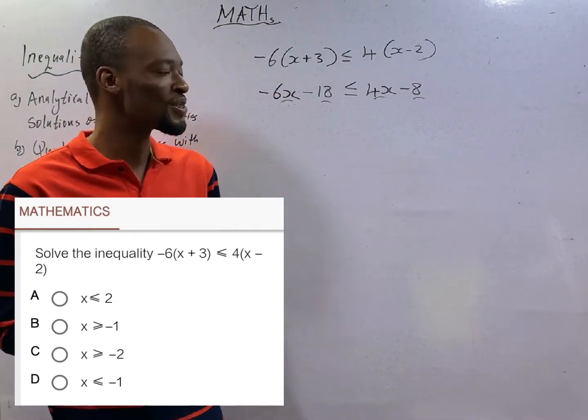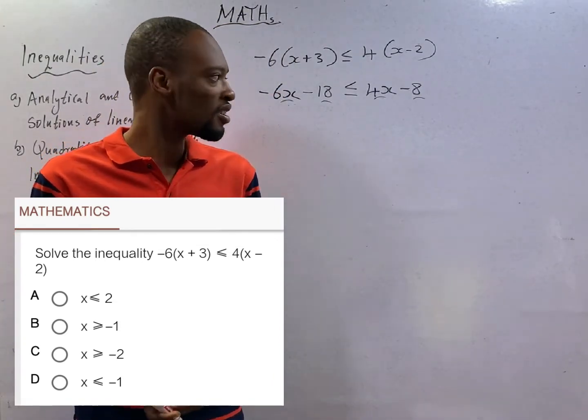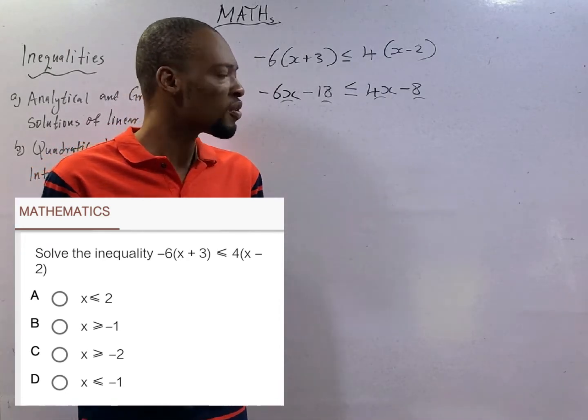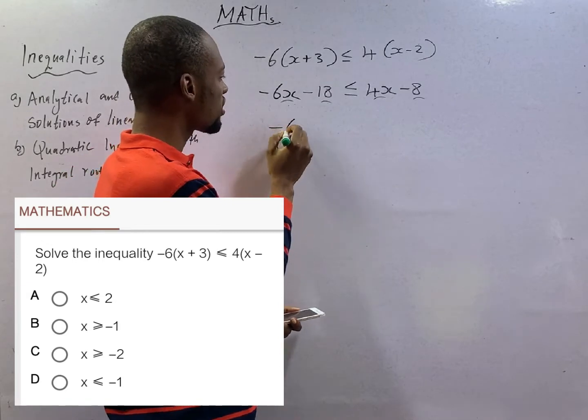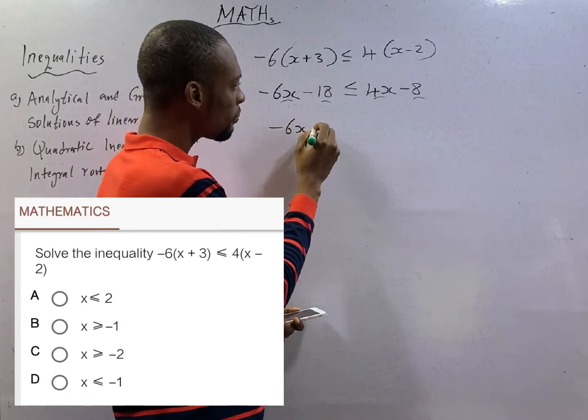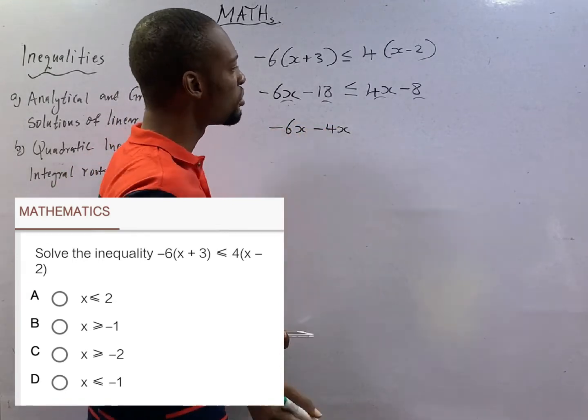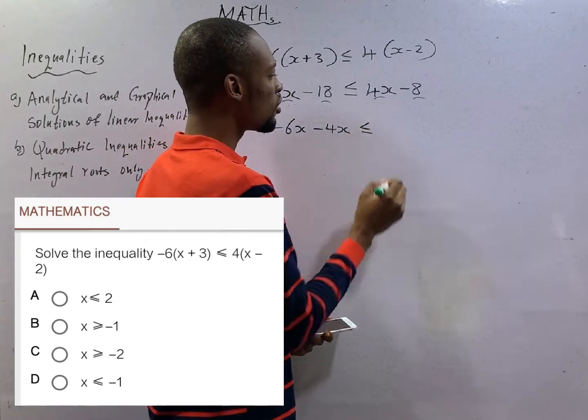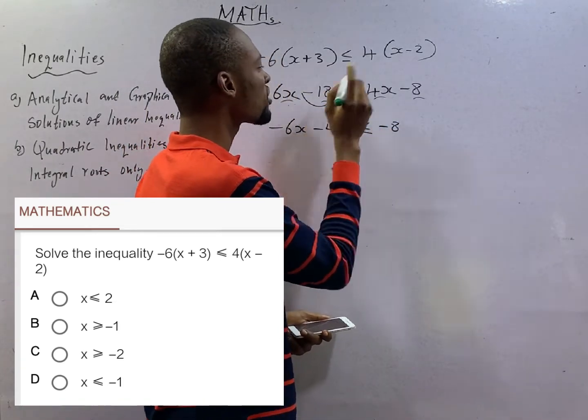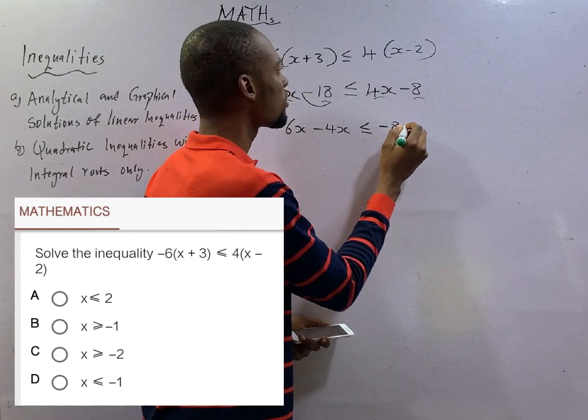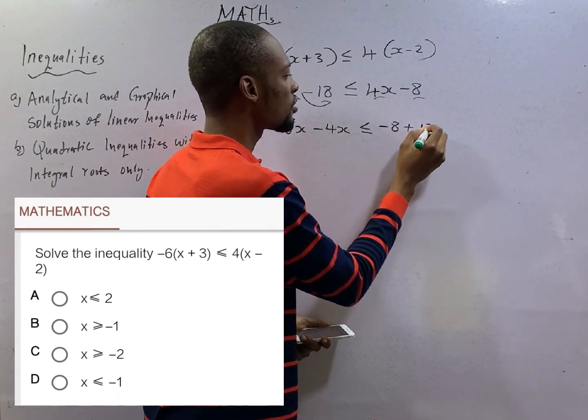This should be pretty easy for us to do. In the sense that -6x minus 4x becomes less than or equal, -8 as -18 moves, it becomes +18.